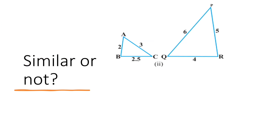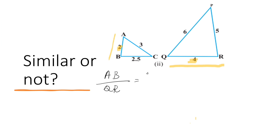Here the measures of 3 sides are given, so we can prove similarity by using the SSS criterion. You can observe that 2 twos are 4, so sides AB and QR are corresponding sides. AB by QR is equal to 2 by 4, that is equal to one half.